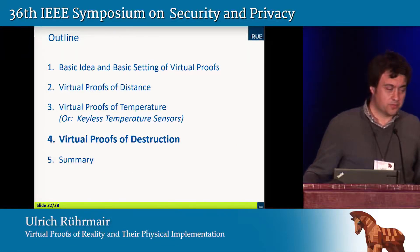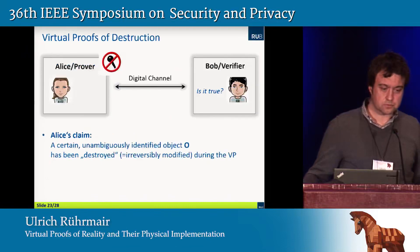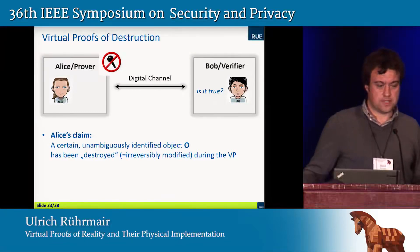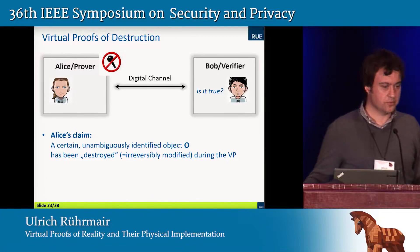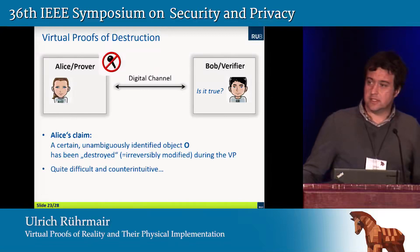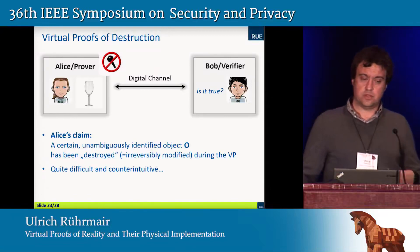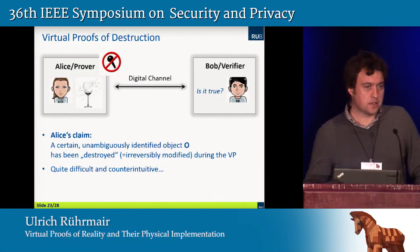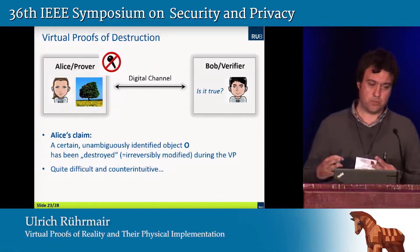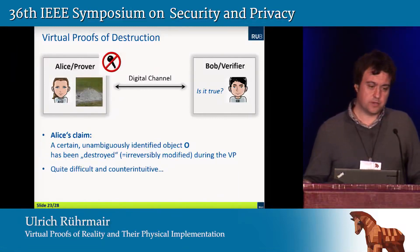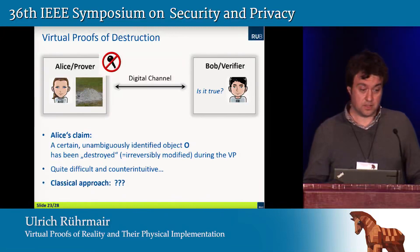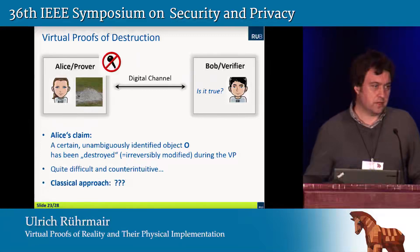Let me come to the last virtual proof I'll discuss: Virtual Proofs of Destruction. This is perhaps the most mysterious but also the most interesting variant. Alice claims that a certain unambiguously identified object has been destroyed or irreversibly modified in the course of the virtual proof. This is quite difficult and counterintuitive — assume Alice holds a piece of glass and it's smashed; how would you prove the fragments originally belonged to that glass? Or if she burns a tree to a pile of ashes, how would you prove that pile of ashes once was that tree? There's no classical approach I know of that has addressed this question.